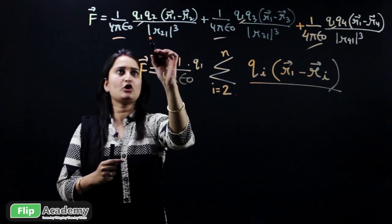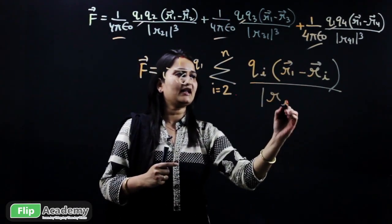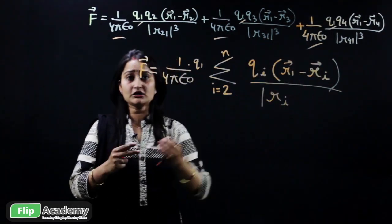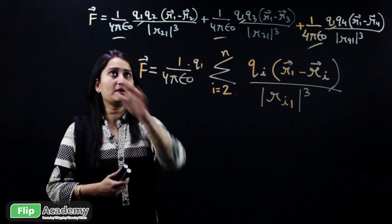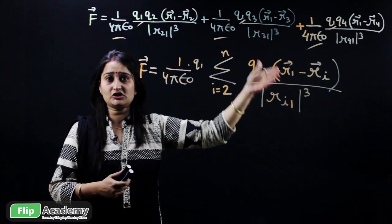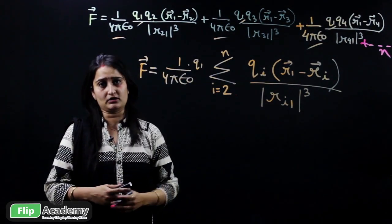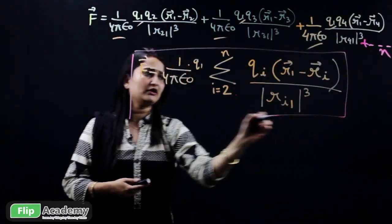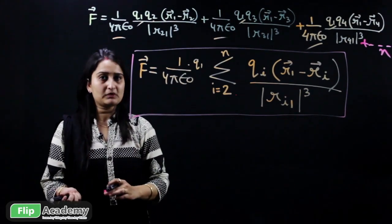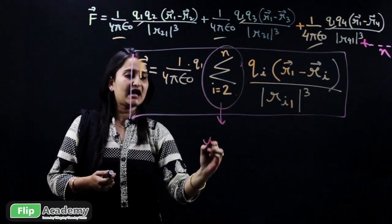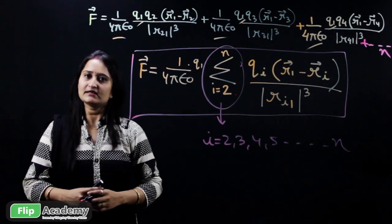In the denominator, r2, r3, r4 keep increasing, so we assign i to them, while the '1' remains constant. It becomes ri1 squared. The final compact formula for the resultant force on Q1 is: F = (1/4π epsilon-naught) × Q1 × summation from i=2 to n of [Qi × (R1 − Ri) / Ri1³]. This single formula allows you to calculate any number of forces, and this is the principle of superposition.